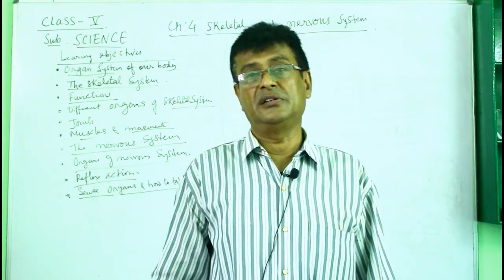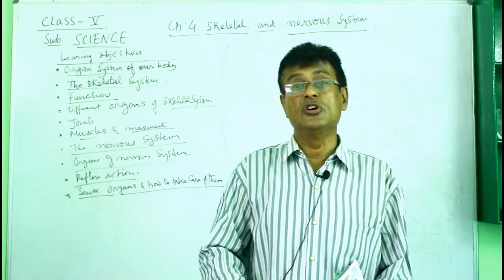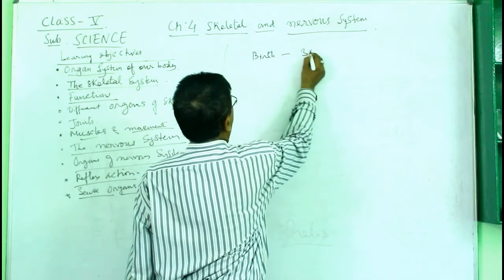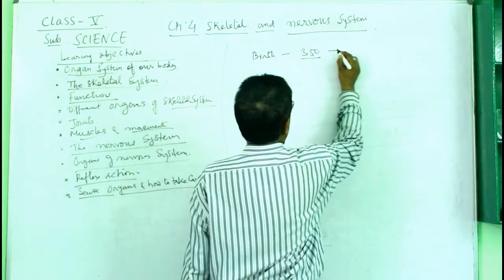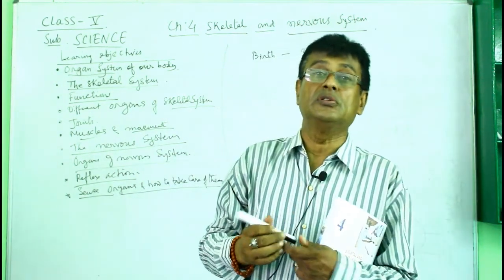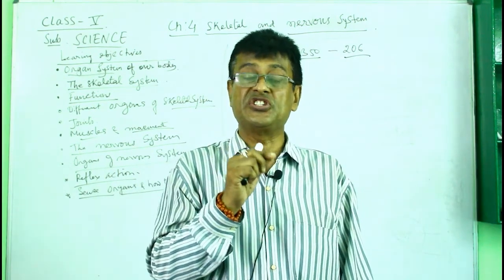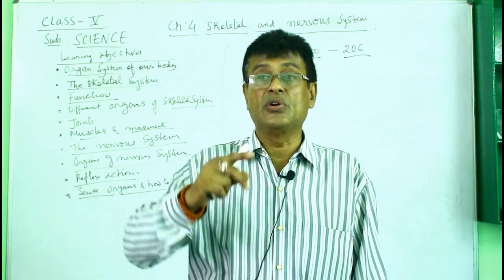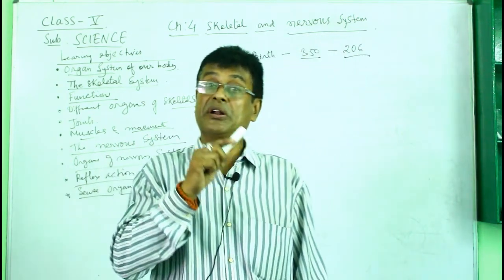When we take birth, we have more than 350 bones. When you are an adult, your bones become 206. Where have these bones gone? These bones were all cartilages - young bones, soft, delicate and apart. As we grow slowly and gradually, they fuse together to form solid bones, and that is why the number reduces to 206 bones.